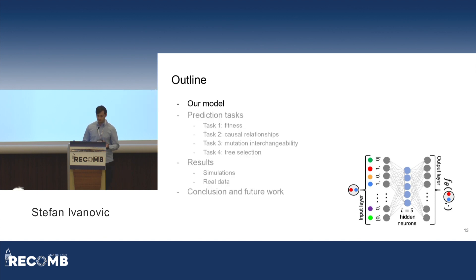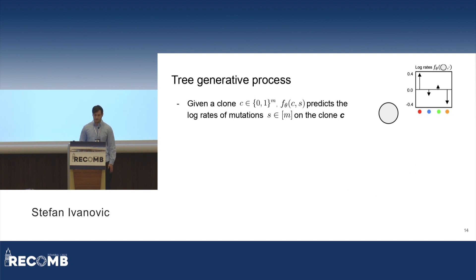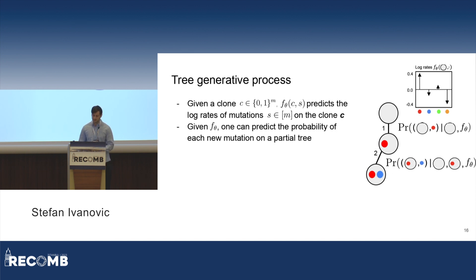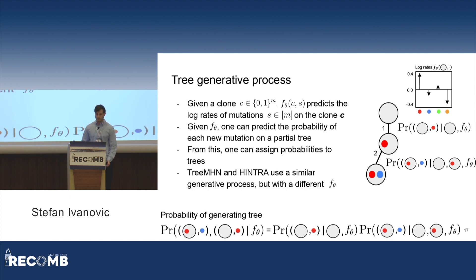Our model first describes tree generation. Given a clone represented by a vector of ones and zeros for the mutations present and absent in the clone, F-theta of C comma S predicts the log rates of mutation S on clone C. So we go from a clone and its mutation to the log rates of mutations occurring on that clone. From this function, one can predict the probability of each new mutation on a partial tree. We start with a partial tree containing just the normal clone, ask what is the probability of extending it by adding the red mutation, and similarly for subsequent additions. From this, one can assign probabilities to trees by multiplying these sequential step probabilities. TreeMHN and Hintra use a similar generative process but with different functions F-theta to model this process.